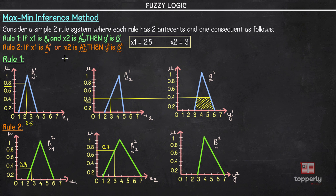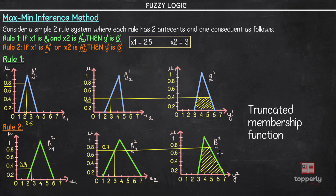Since Rule 2 uses the OR connective, we take the maximum of the membership values of x1 and x2. The maximum of 0.3 and 0.7 is 0.7. We extend 0.7 onto the output graph and shade the output region. As seen from y1 and y2, both triangles have been truncated into a shorter trapezium shape, giving us a truncated membership function — this is the output in the max-min inference method.